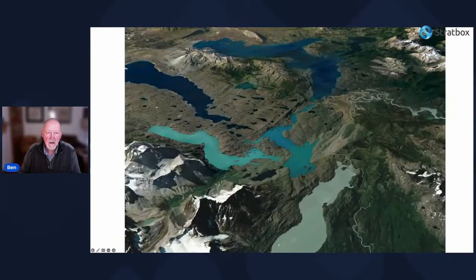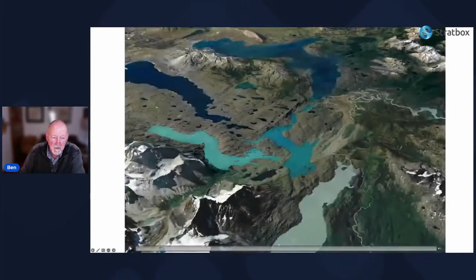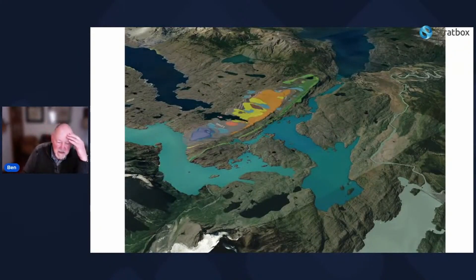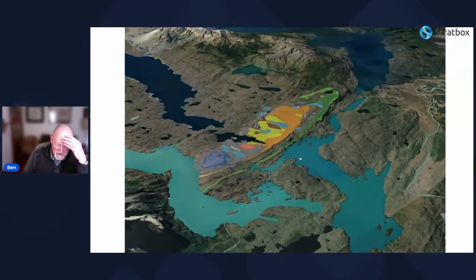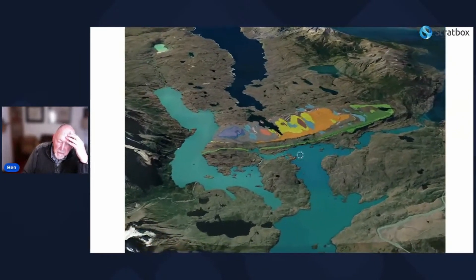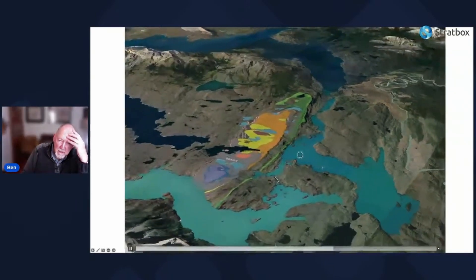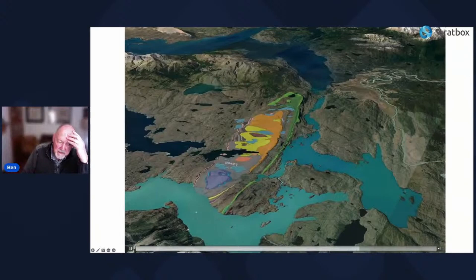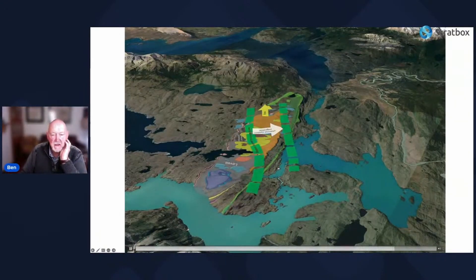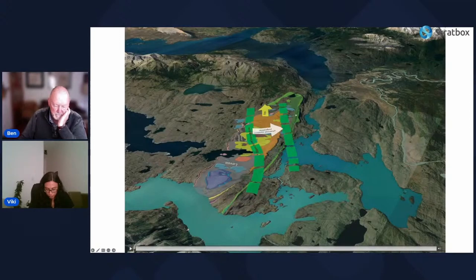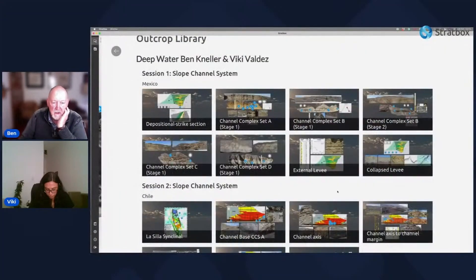The next example is from southern Chile — a nicely exposed Late Cretaceous system on highly glaciated terrain with about 400 meters of relief. It outcrops in a syncline, giving about 10 kilometers of mapped outcrop. A channel system cuts obliquely across it and has migrated from left to right, with levees on both sides.